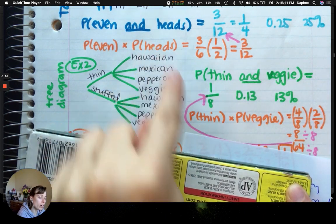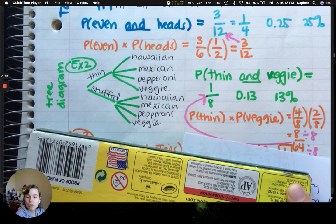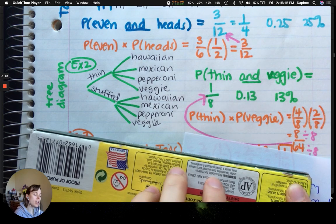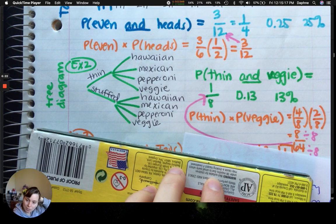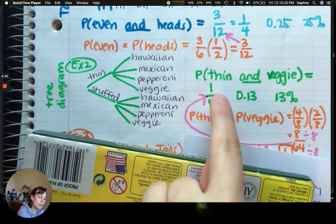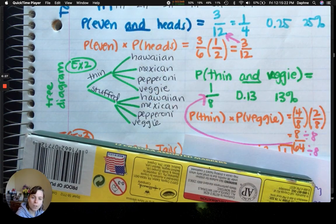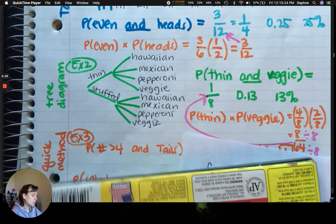So, notice that in orange, these are the compound, the quick method, the multiplication method that we can use. But, you don't have to multiply, because you could use a table, and you can use a tree diagram. Okay. So, last one.